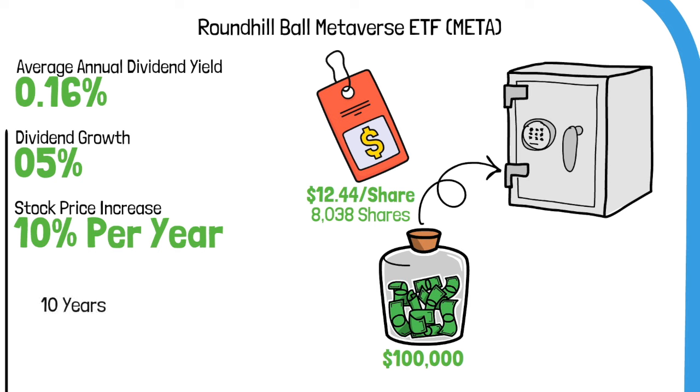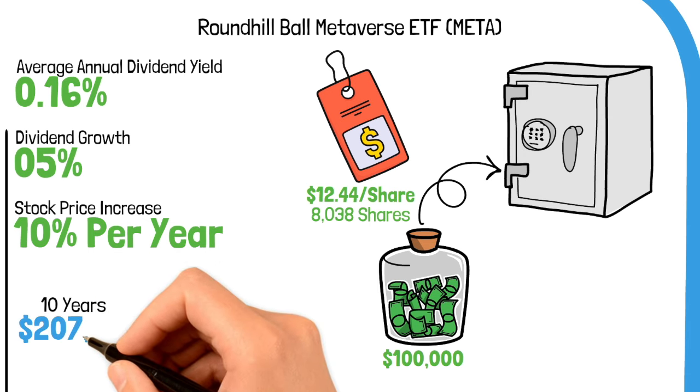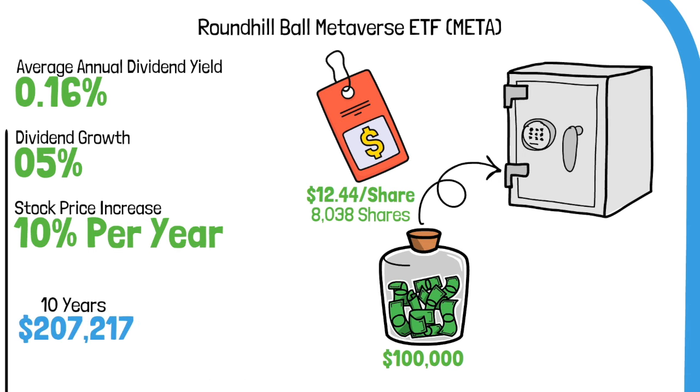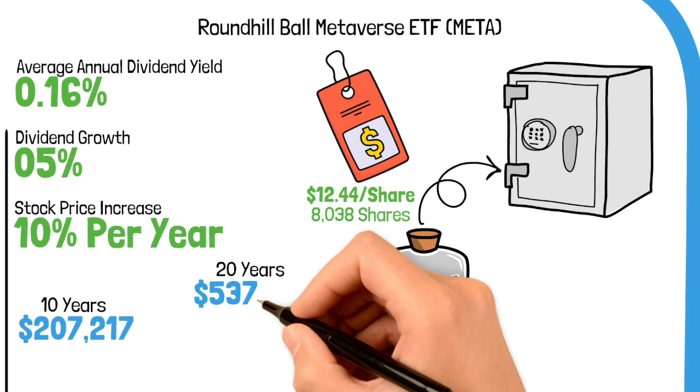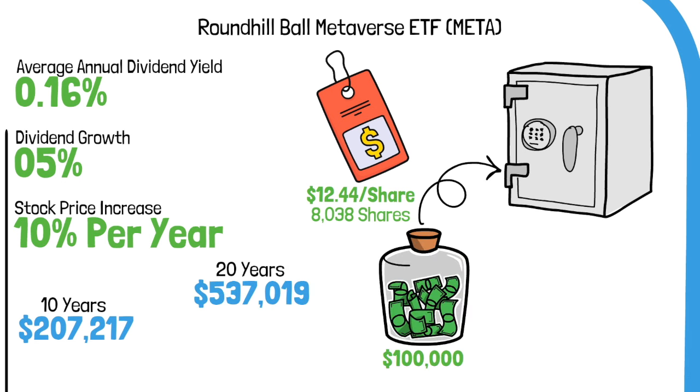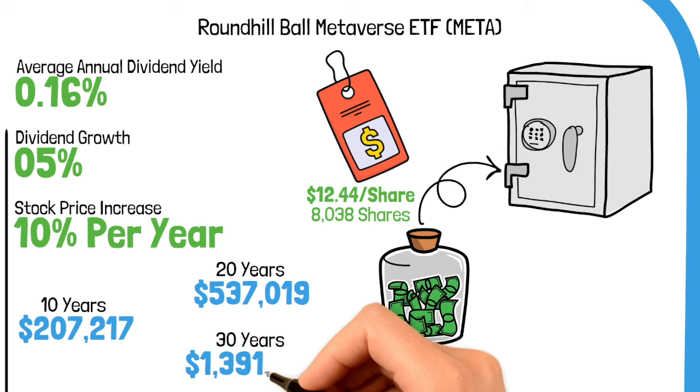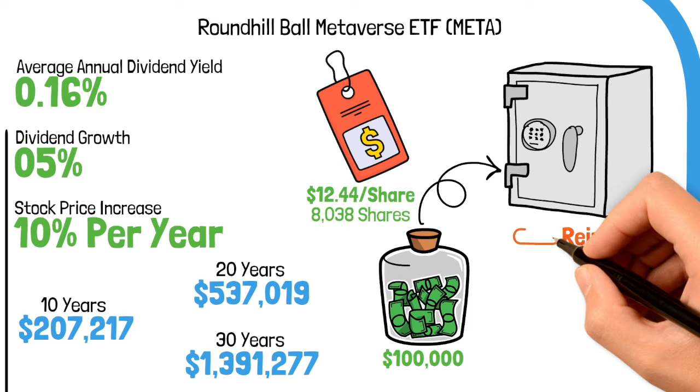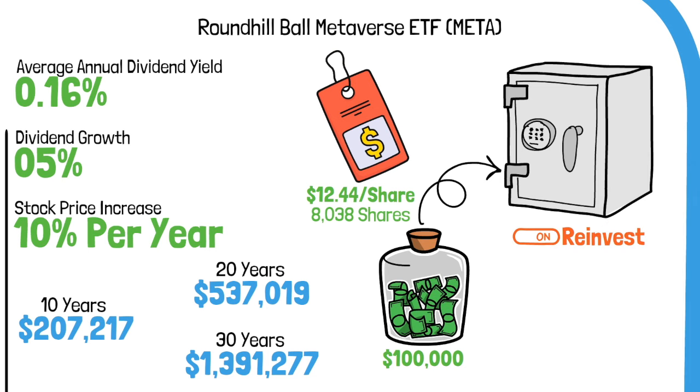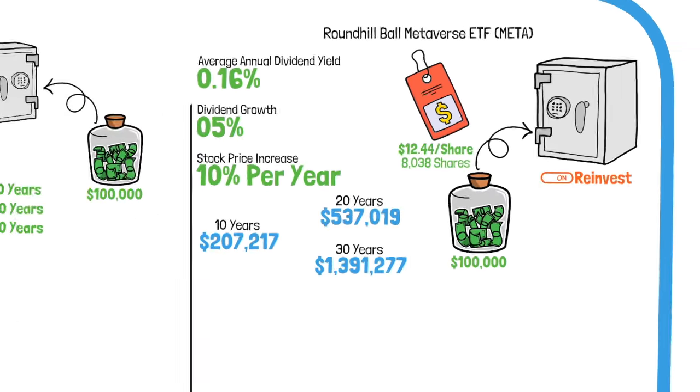After 10 years, your investment could grow to approximately $207,217. Extending the holding period to 20 years, it might reach around $537,000. And after 30 years, it could skyrocket to about $1.3 million. These figures reflect the power of compound growth and reinvested dividends over time, especially with a solid annual growth rate in the stock price.